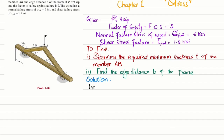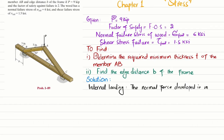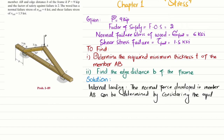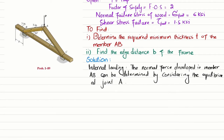First we will find the internal loading. The normal force developed in member AB can be determined by considering the equilibrium at joint A. What we will do is take joint A, draw the free body diagram, and find the force FAB.